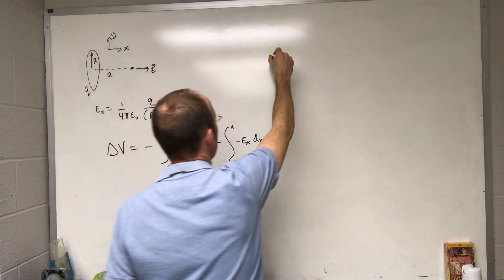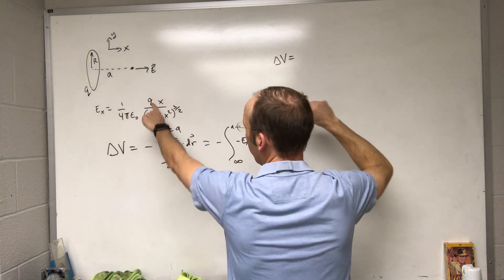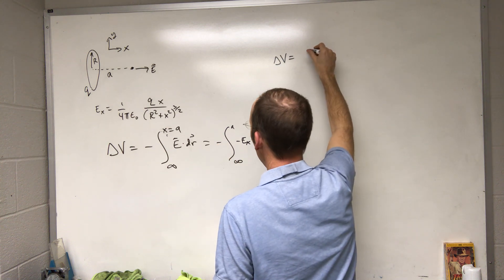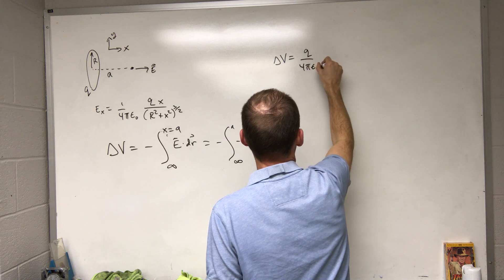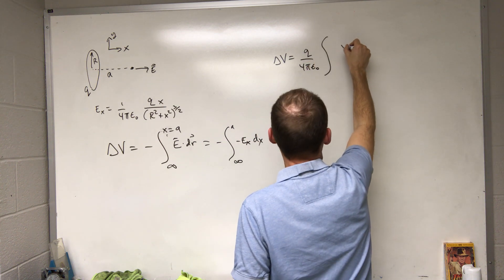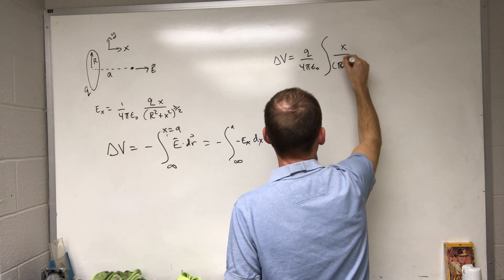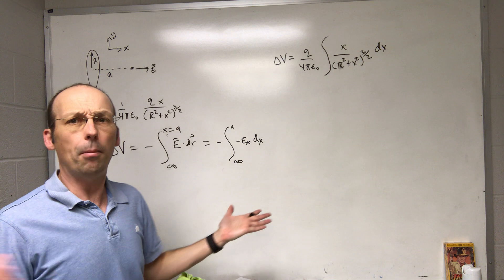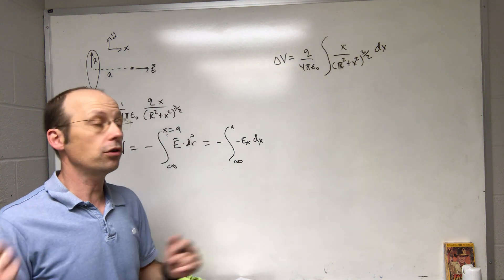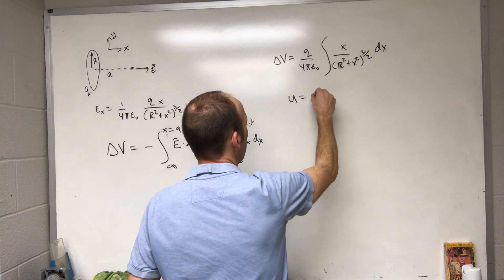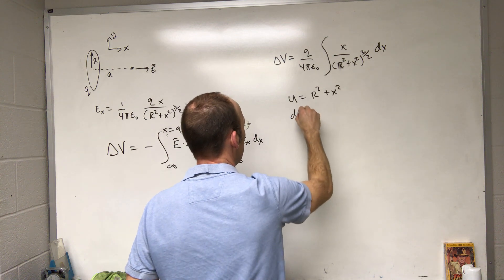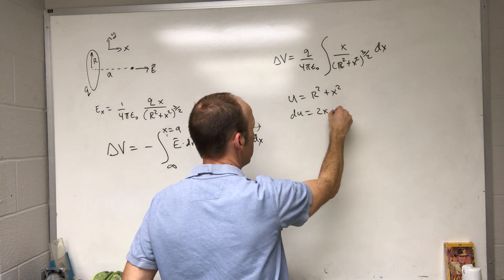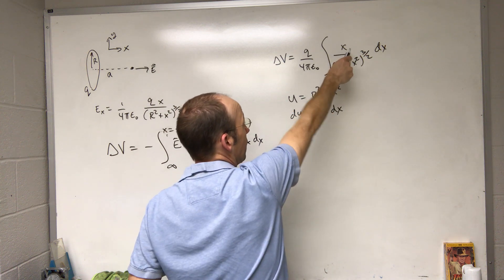So ΔV is going to equal: I have some constants — Q and 1/4πε₀ — I'll bring those out front. With a negative and a negative, it becomes Q/4πε₀ times the integral of x / (R² + x²)^(3/2) dx. Now I need to integrate that. It's actually not a bad integral — let u = R² + x², then du = 2x dx, so x dx = du/2.